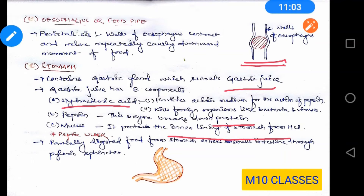You might have heard about peptic ulcer. When you do not eat properly when hungry, the hydrochloric acid produced in the body is not neutralized by any food and gradually affects the inner lining of the stomach, producing an ulcer. So students, eat properly, regularly, and at proper times. The partially digested food from the stomach gradually enters into the small intestine through a sphincter muscle called the pyloric sphincter, which acts like a valve.